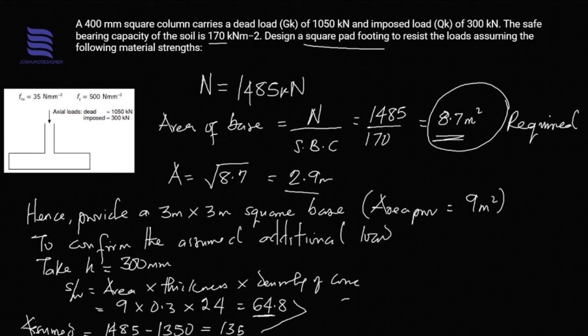Comparing these two, we can deduce a conclusion that 64.8, which is the actual self-weight of the base, is less than that which we assumed, 135, so our assumption is okay. However, the assumed thickness of the base is subject to verification once we start to design flexural reinforcement and check for shear. We need to confirm if the thickness is sufficient for the load and the area we are considering.